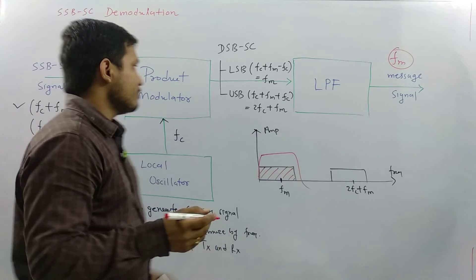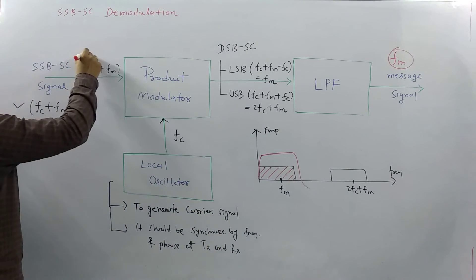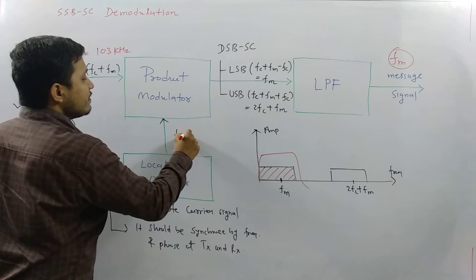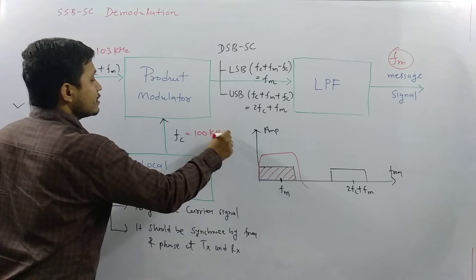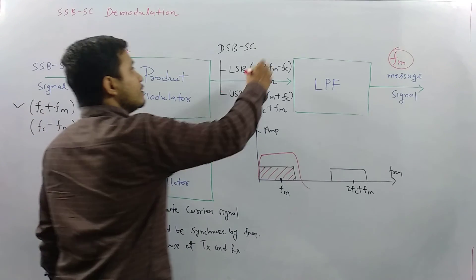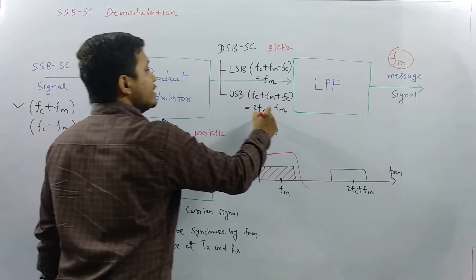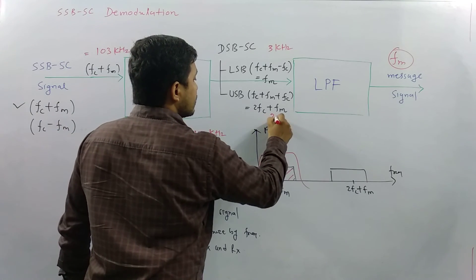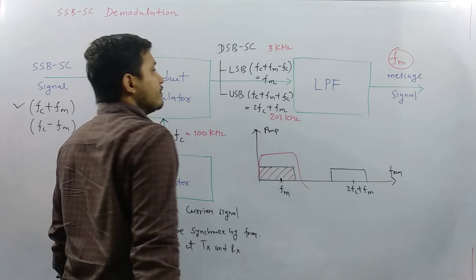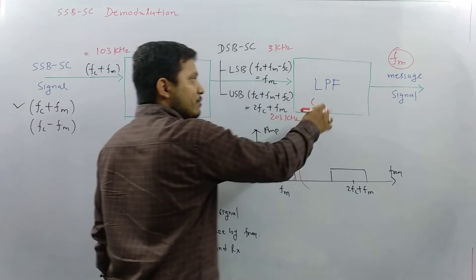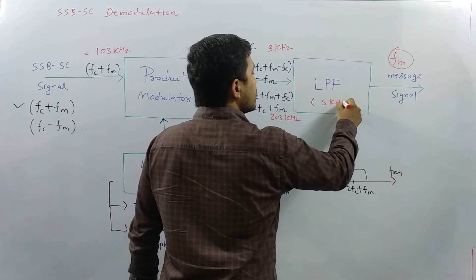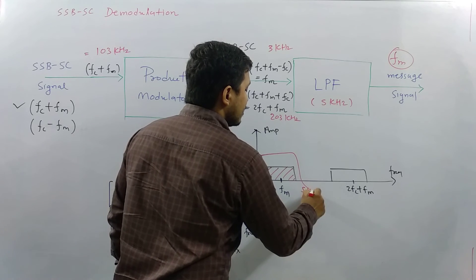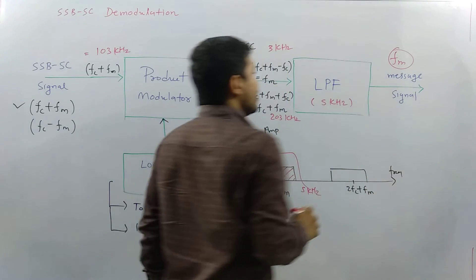Let us take a numerical example to make this clearer. Say the SSB-SC signal has a frequency of 103 kHz and the carrier signal has a frequency of 100 kHz. The two resulting bands are 3 kHz (lower) and 203 kHz (upper). If we choose a low pass filter with a bandwidth of 5 kHz — passing 0 to 5 kHz — it will allow the 3 kHz signal through, and the original signal is extracted.